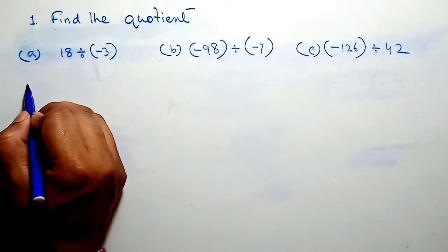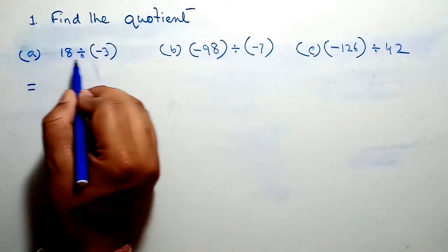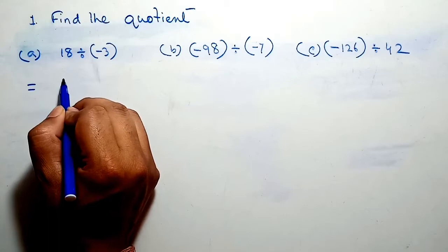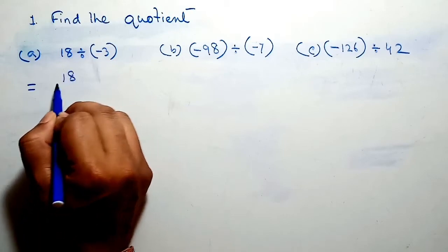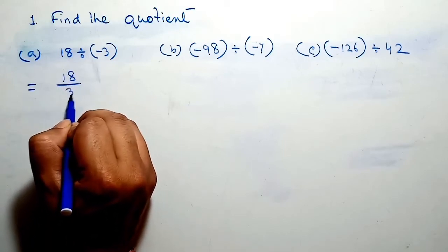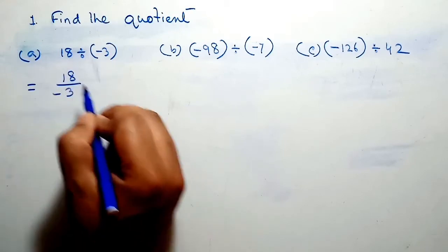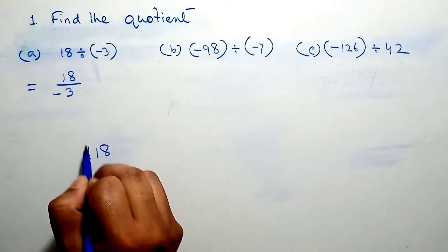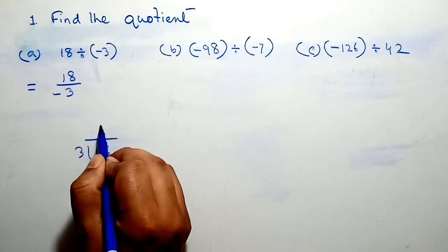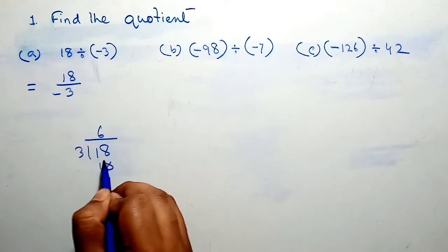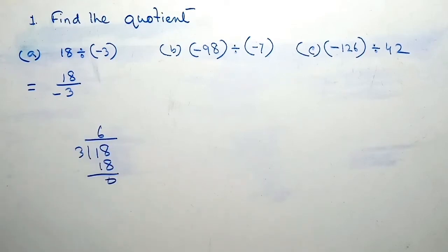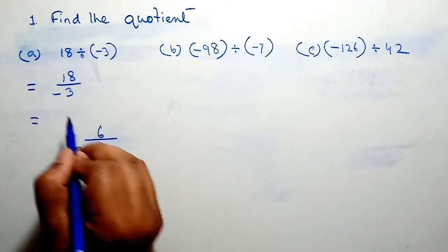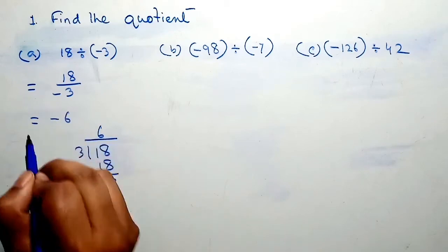Question 1, find the quotient. Question A: 18 divided by minus 3. We write 18 divided by minus 3. Now we divide 18 by 3. 3 sixes are 18, therefore the remainder is 0. So our answer is minus 6.